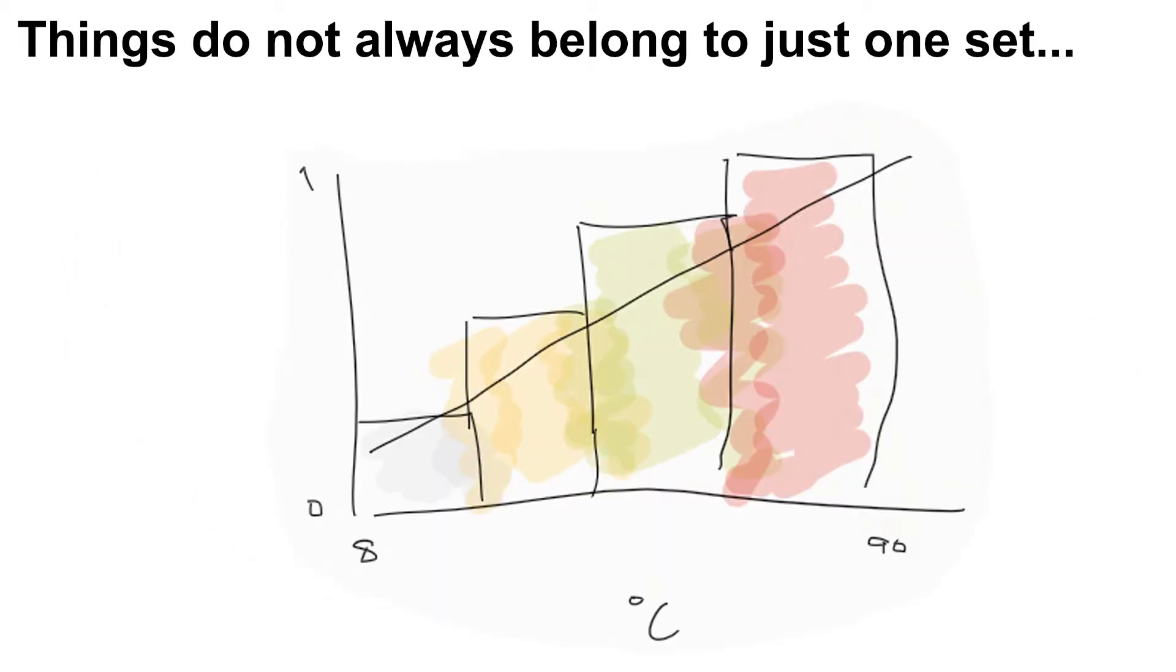Fuzzy logic believes that things can simultaneously be parts of two or more sets. For example, 69 and 70 degrees both are parts of the set steaming and hot, but to a different degree with respect to each other. Things are not always part of just one exclusive set.